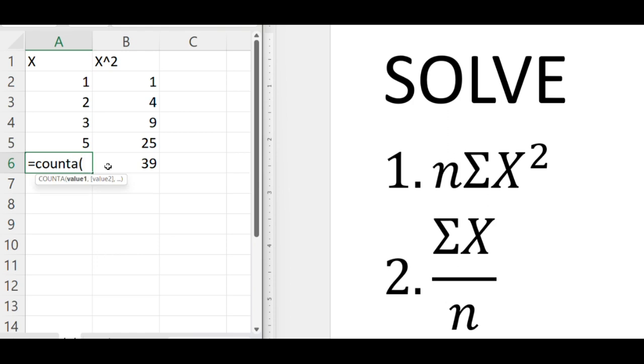We can use a command like count a, which counts all the non-blank cells in a region, to simply count how many there are. Here we have four scores and the sum of their x squared values was 39. We can use those two values to multiply n by the sum of x squared and get our answer here, 156.